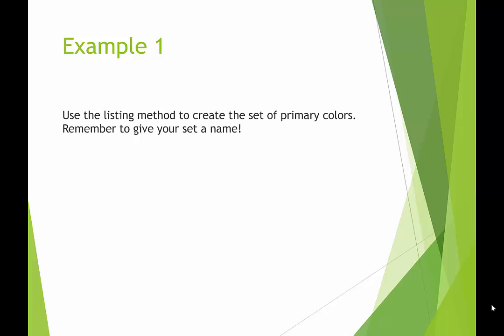Looking at our first example, we're going to use the listing method to create a set, the set of primary colors. Remember to give your set a name and we don't get to name it like Billy or Peter. No, we use a single capital letter. Usually you want to use something that makes sense so I might use the letter P or the letter C. So we can say P equals and then we're using the listing method so we're going to open up a brace. We're going to write the three primary colors red, blue, and yellow. And here is a set using the listing method.